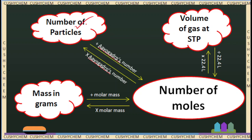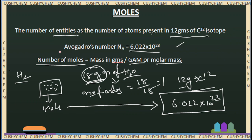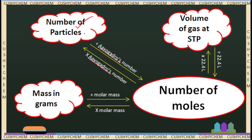We will talk about the number of particles. The number of particles divided by 6.022 × 10²³ gives us the number of moles. If we multiply the number of moles by 6.022 × 10²³, we get the number of particles.